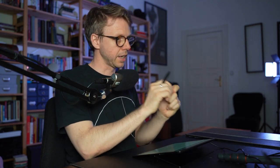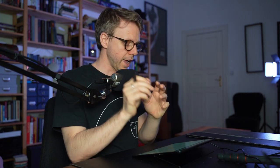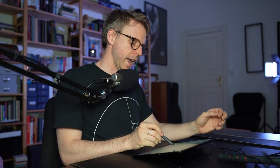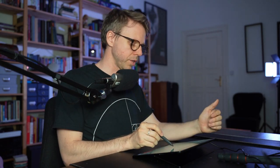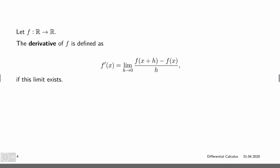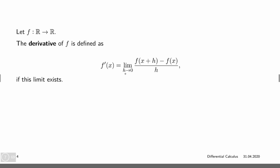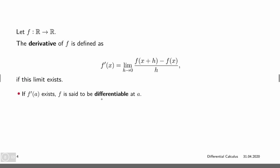So we're basically evaluating at x plus a tiny change and at x itself, looking at the difference and dividing by the size of this change h. And if we let h go to 0 in the limit, then if this limit exists, this is our derivative — our rate of change. If this exists, we call f differentiable at this point a.